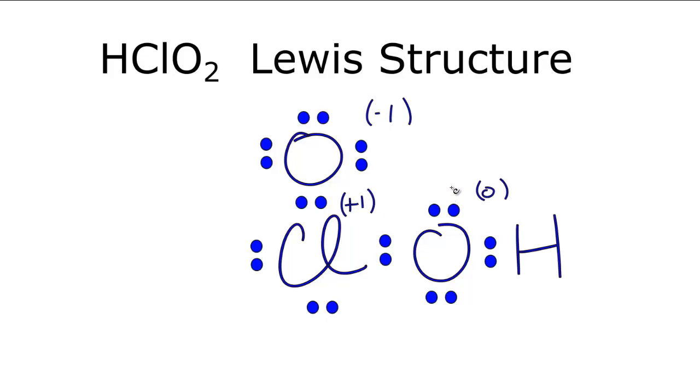But we can do a little bit more here to get all of the formal charges to zero. I see that I have a negative one on the oxygen here and a plus one on the chlorine. It seems if I move two of these electrons down to the chlorine, that might somehow fix the formal charges. So I'm going to do that and then recalculate.